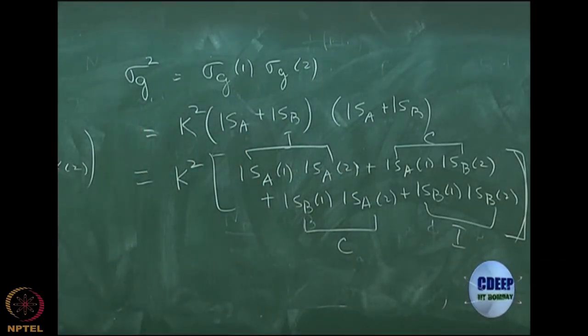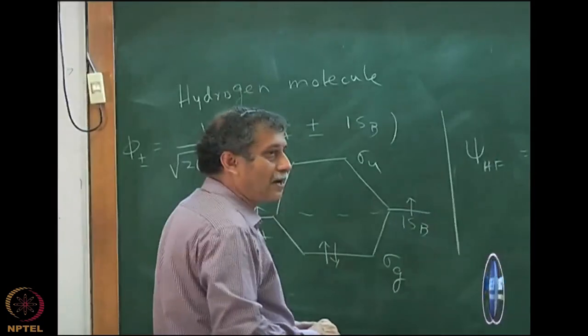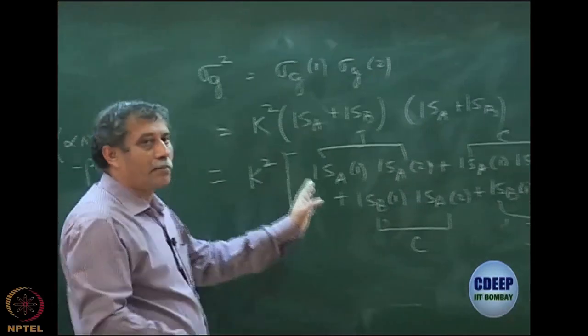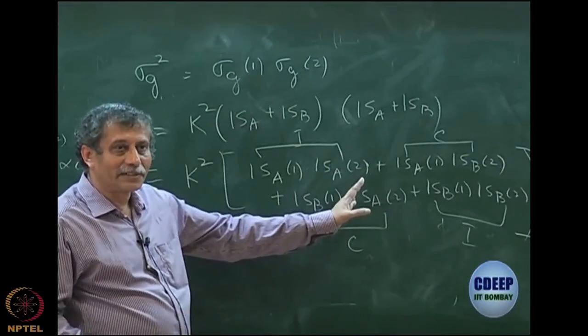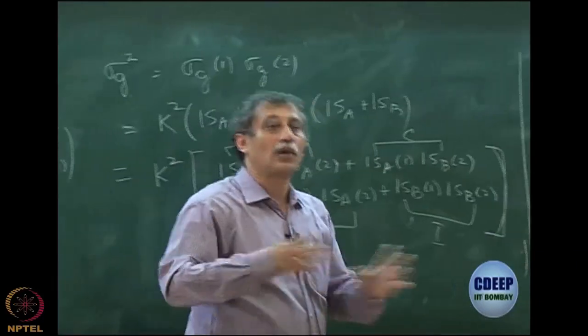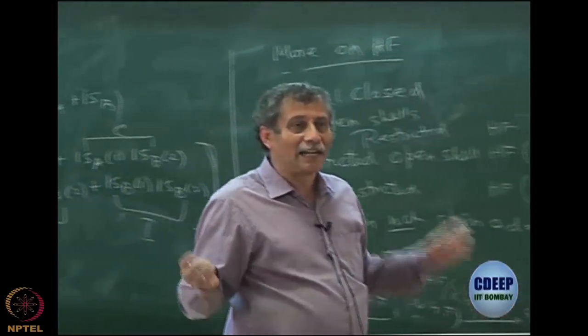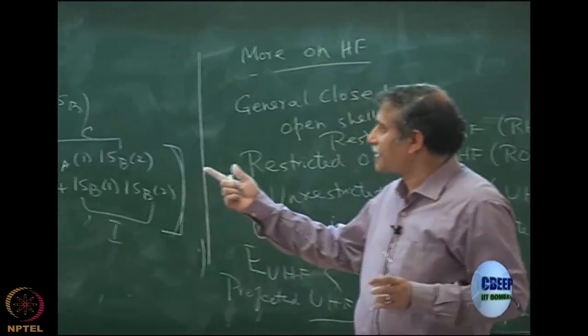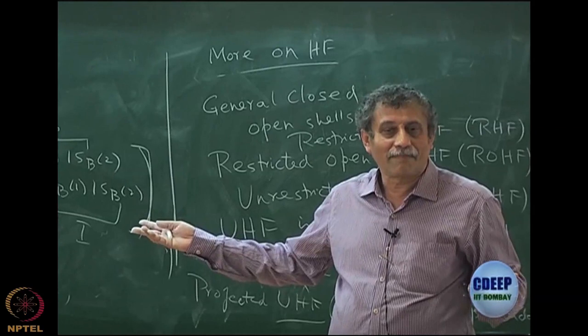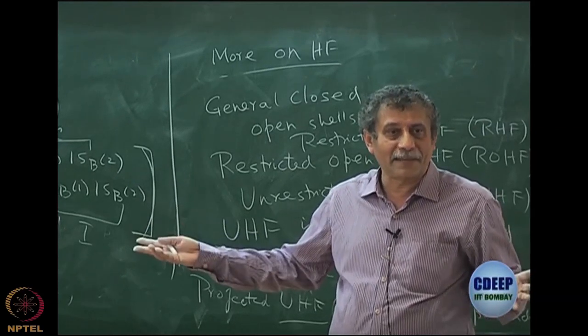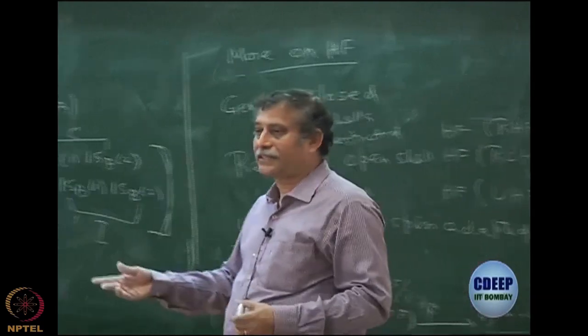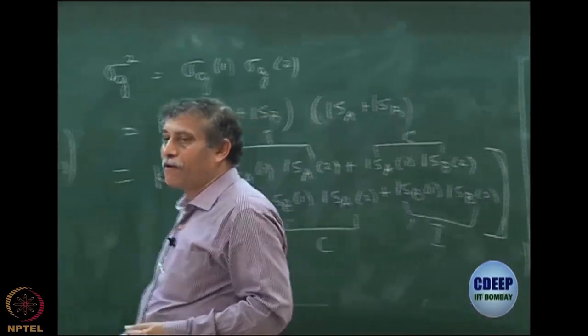If you analyze the Hartree-Fock restricted Hartree-Fock of hydrogen molecule, you can clearly see that it is a linear combination of covalent and ionic terms, which is something that you probably would expect that it is not purely covalent. It is a little bit of ionic term should be there, but what is surprising is that the ionic terms are the same proportion as the covalent term.